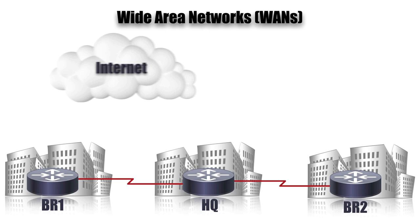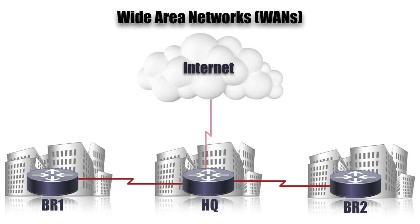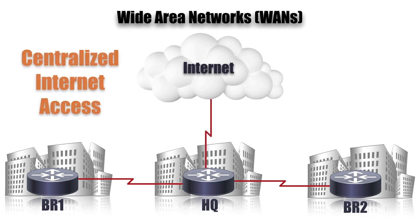One example is centralized internet access: there's an internet connection from the main HQ site going out to the internet. If BR1 or BR2 want to get to the internet, they have to go over the WAN link back to HQ. This can reduce cost — only one internet connection shared across all three sites, with less hardware and less maintenance involved.